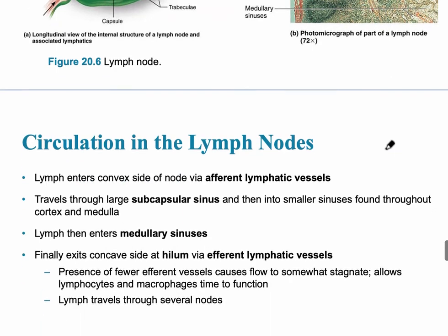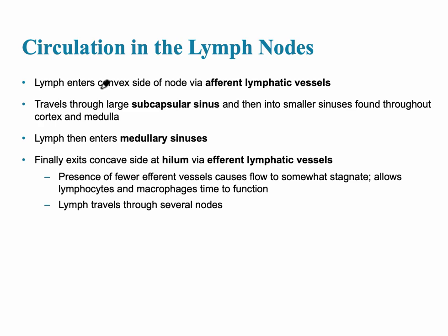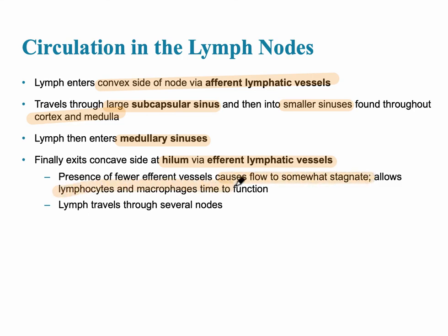For the circulation of the lymph node: lymph enters the outer convex side via the afferent lymphatic vessel, travels through the large subscapular sinus into smaller sinuses throughout the cortex and medulla, then enters the medullary sinus, and finally exits at the hilum into efferent lymphatic vessels. The large number of afferent vessels and fewer efferent vessels causes the fluid to remain somewhat stagnant, allowing lymphocytes and macrophages time to perform immune surveillance. If lymph nodes in a particular area have a backup of lymph, it is because lymphatic vessels or nodes have been removed in that area.